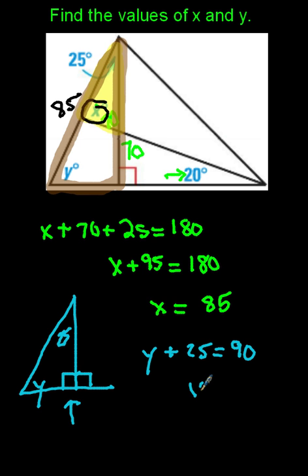So when I do my arithmetic here, I get Y equals 90 minus 25, which is 65. So Y ends up with a value of 65 and X ends up having a value of 85.